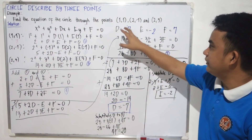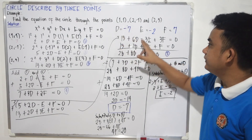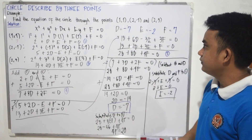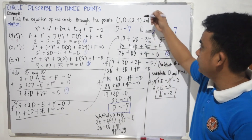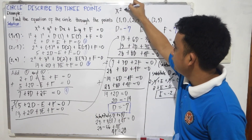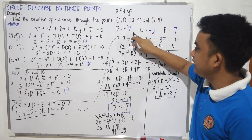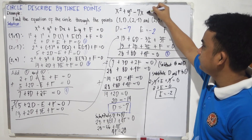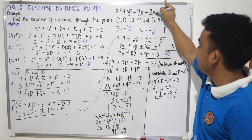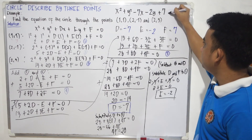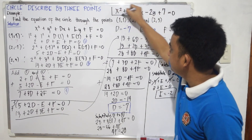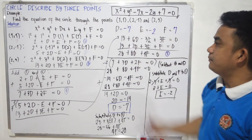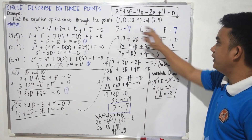Now we have all coefficients d, e, and f. Substituting into the general equation of the circle: x squared plus y squared minus 7x minus 2y plus 7 equals 0. This is the general equation of the circle given the three points (1, 1), (2, -1), and (2, 3).